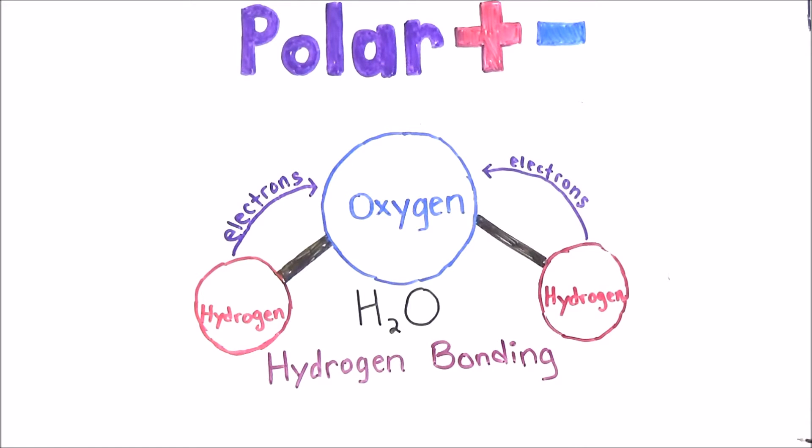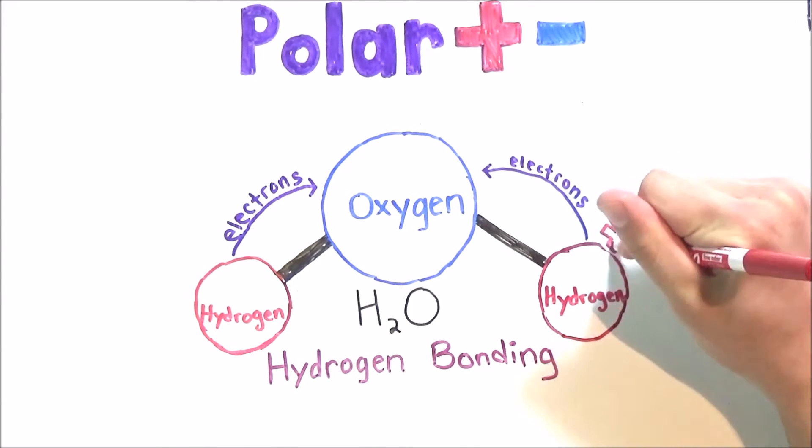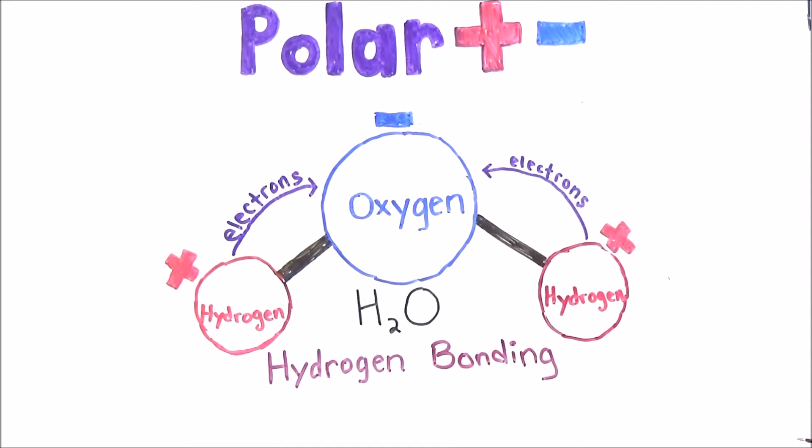However, after the hydrogen lends electrons, which have a negative charge, to oxygen, the hydrogen atoms lose some negative charge and the oxygen atoms gain some negative charge. This makes the area around the hydrogen atoms slightly positive and the area around the oxygen atom slightly negative.